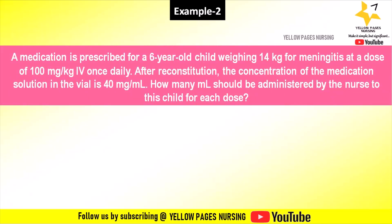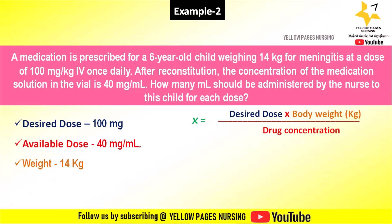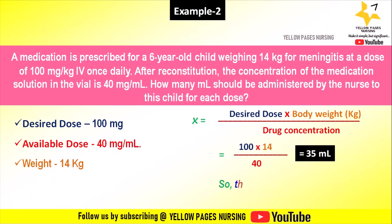Let's do another example. A medication is prescribed for a 6-year-old child weighing 14 kg for meningitis at a dose of 100 mg per kg IV once daily. After reconstitution, the concentration of the medication solution in the vial is 40 mg per ml. How many ml should be administered? The formula is: X = (desired dose × body weight in kg) ÷ drug concentration = (100 × 14) ÷ 40 = 35 ml. So the nurse will administer 35 ml.